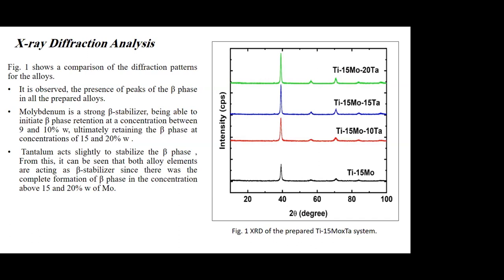For the XRD diffraction analysis, we can see from the figures for all four samples that all peaks correspond to the beta phase for the prepared alloys. This is because molybdenum is a strong beta stabilizer, able to initiate beta phase formation at concentrations between 9 to 10 percent, and fully beta phase between 15 and 20 percent. The second reason is that tantalum acts as a slight beta phase stabilizer. Both alloying elements act as beta stabilizers, resulting in a completely formed beta phase at molybdenum concentrations above 15 to 20 percent.